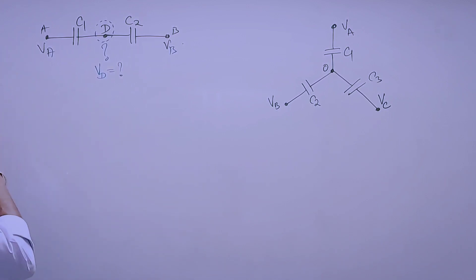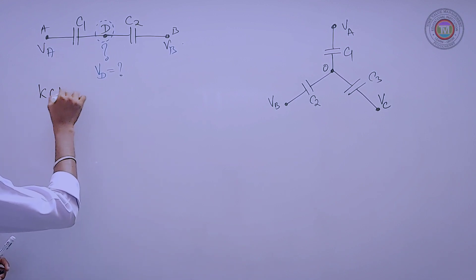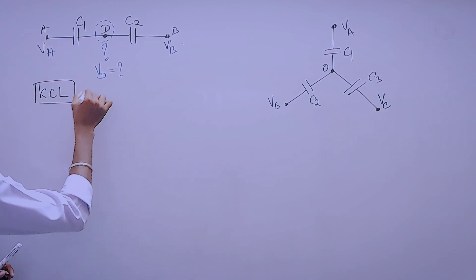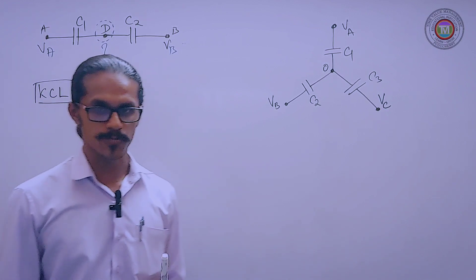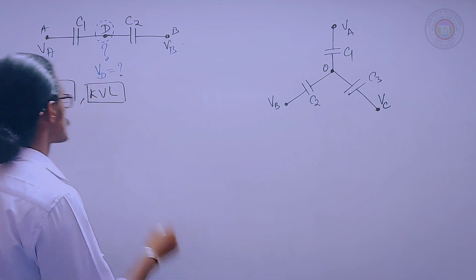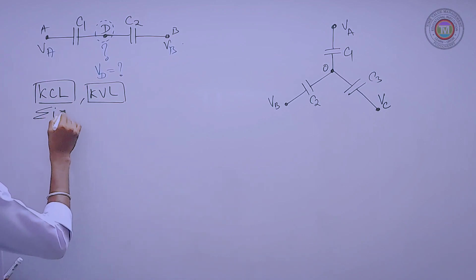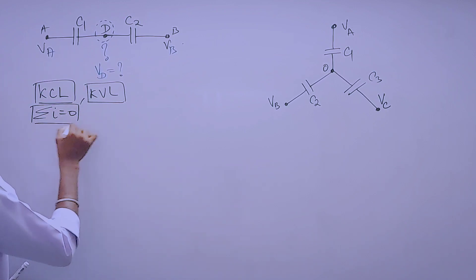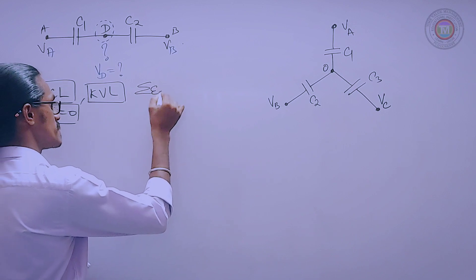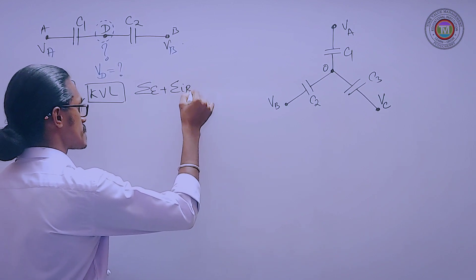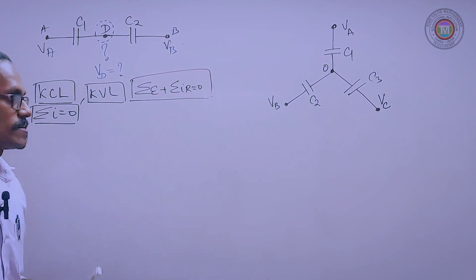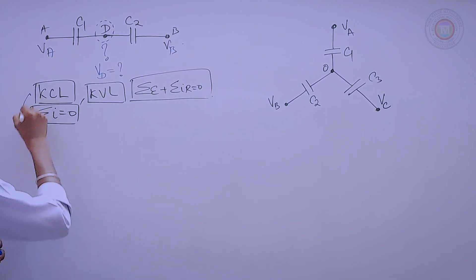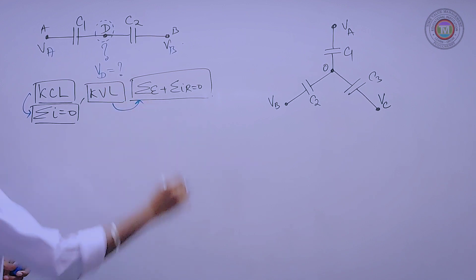So we have to consider a concept called KCL and then KVL. What is KCL? It is summation of I is said to be zero. What is KVL? It is summation of EMF and then summation of I times R is said to be zero. This is KCL and this is KVL.